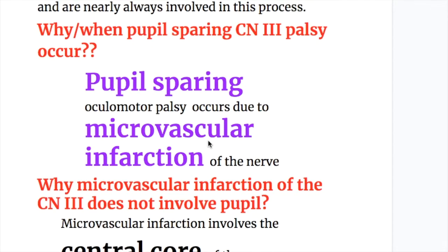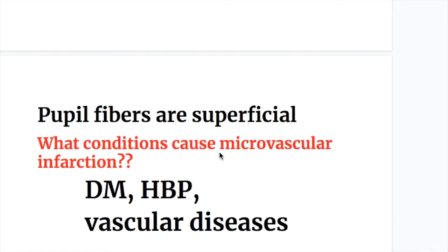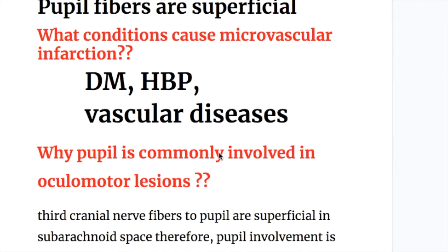Pupil-sparing oculomotor palsy occurs due to microvascular infarction of the nerve. Microvascular infarction involves the central core of the nerve, and the pupil fibers are superficially placed, so they are not affected. Conditions that cause microvascular infarction include diabetes mellitus, hypertension, and vascular diseases.